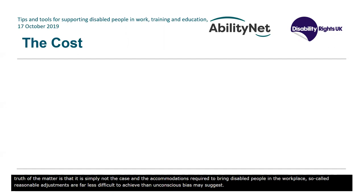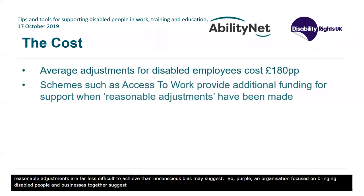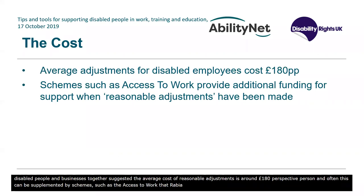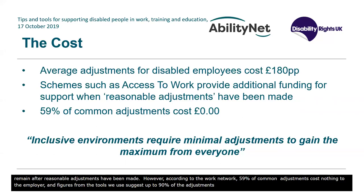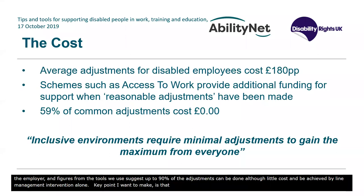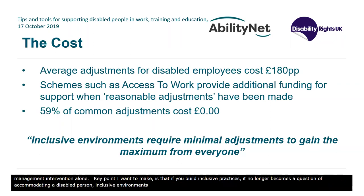Purple, an organisation focused on bringing disabled people and businesses together, has suggested that the average cost of reasonable adjustments is around £180 per person, and this can often be supplemented by schemes such as Access to Work. According to the US Job Accommodation Network, 59% of common adjustments cost nothing to the employer. Figures from the tools we use suggest up to 90% of adjustments can be done at very little cost and achieved by line management intervention alone. The point is: if you build inclusive practices, it no longer becomes a question of accommodating a disabled person. Inclusive environments require minimal adjustments to gain the maximum from everyone — it's not about accessibility, it's about universality.